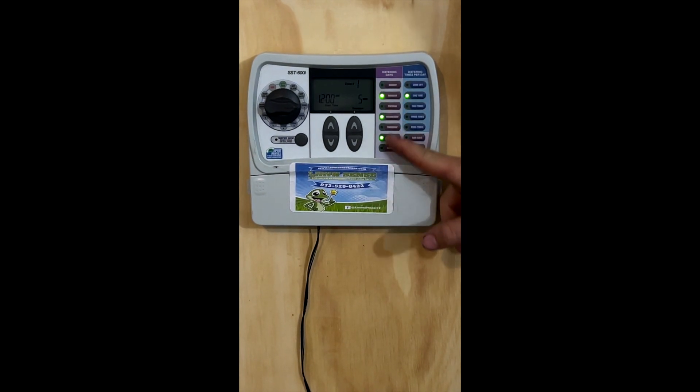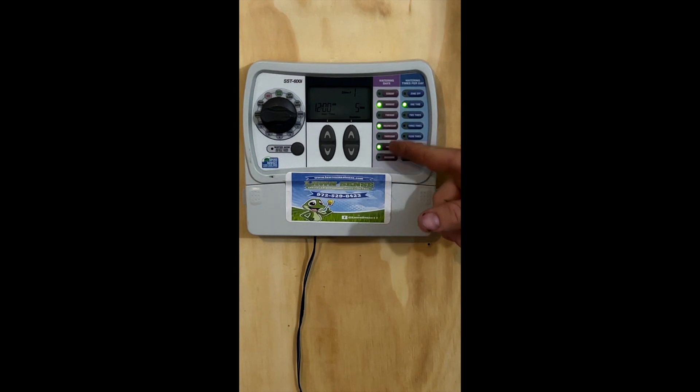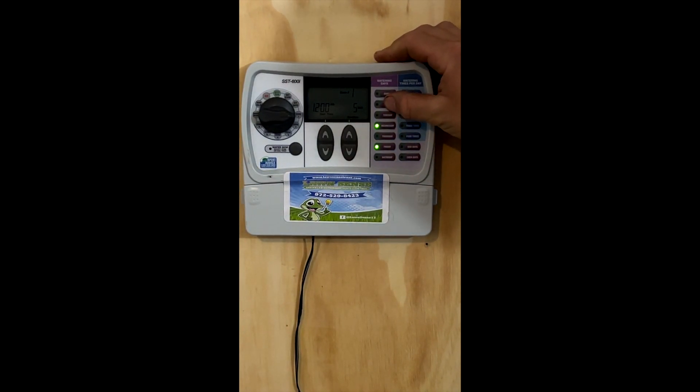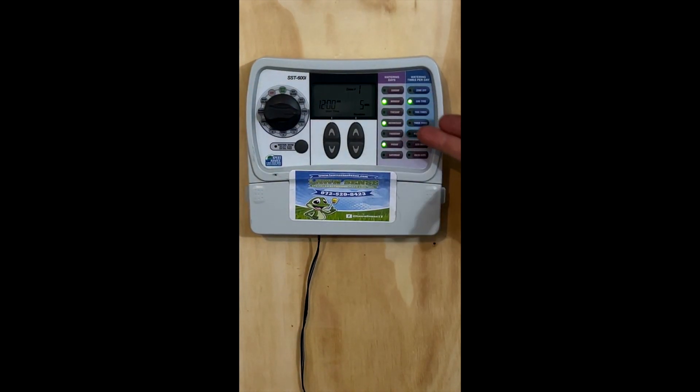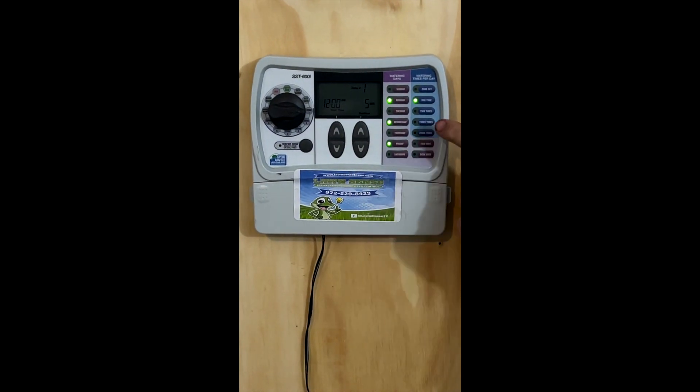We're going to figure out how many days a week we want this zone to run. So this one's programmed to run Monday, Wednesday, and Friday. If we want to take a day away, all we have to do is push it. When the light goes away, the day is not running. Push it again. When the light comes back, that day is on.